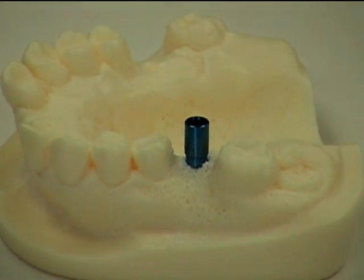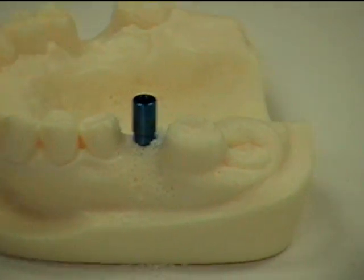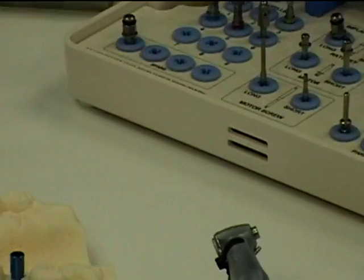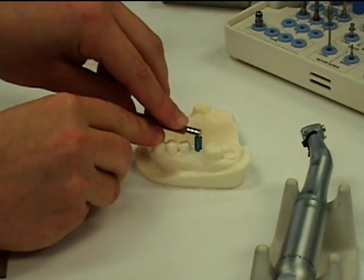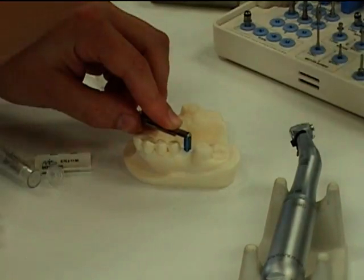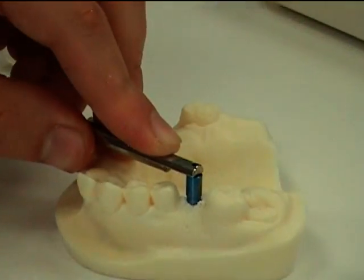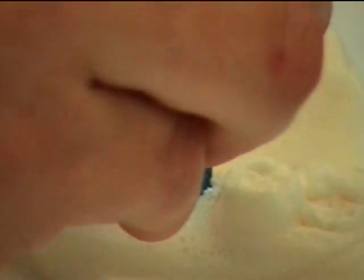We'll then release the fixture mount. The holding mount key goes into place in the fixture mount. That will prevent the implant from turning so that only the screw may turn.